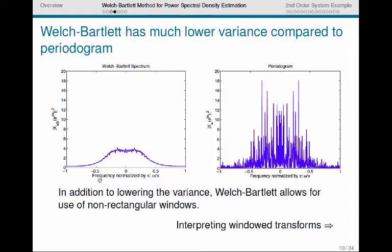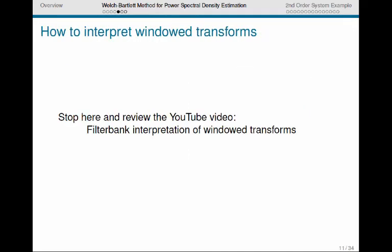Now, in addition to lowering the variance, Welch-Bartlett does allow for use of these non-rectangular windows, like the Blackman window, and that has some advantages because it lowers the side lobe leakage. We'll see that as we discuss how to interpret these windowed transforms as the output of a filter bank. There's another video on YouTube about how to interpret windowed transforms. If you haven't already watched that, you should pause this video and go watch that.